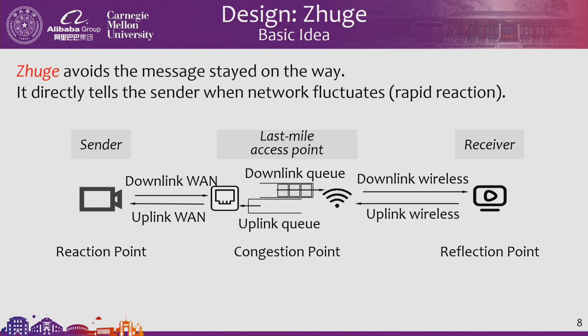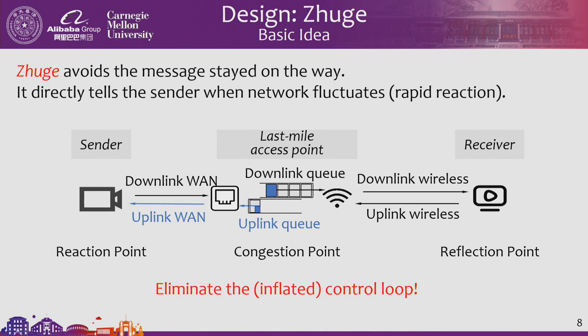Now we go to our design, Zhuge, which is like a fortune teller to give predictions. If we could let the sender know about congestion directly — bypassing all the redundant parts including the downlink queuing delay and wireless link delays — we could let the sender reduce its rate quickly and eliminate the inflated control loop.